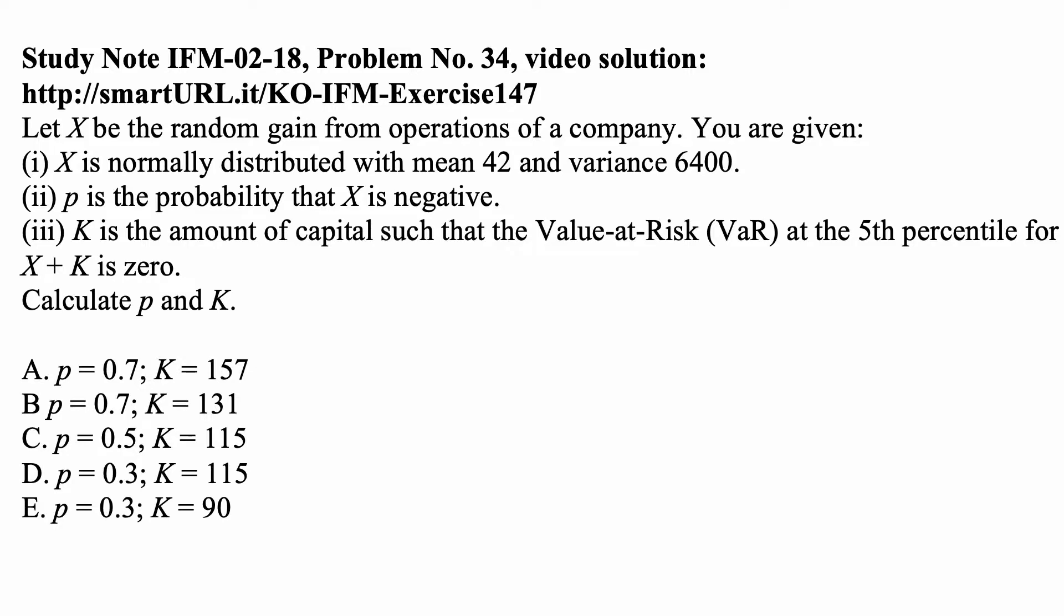Here is a problem for today for exam IFM, Investments in Financial Markets. Let X be the random gain from operations of a company. You are given that X is normally distributed with mean 42 and variance 6400.